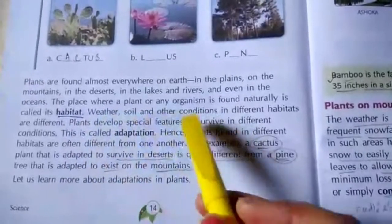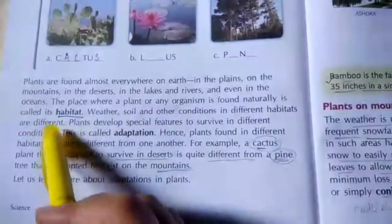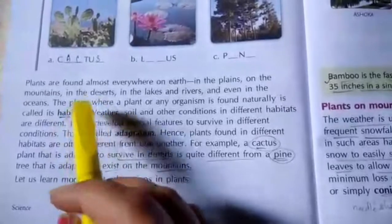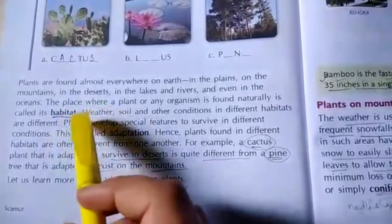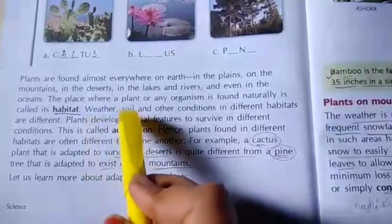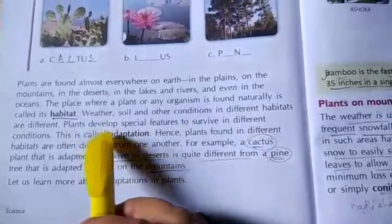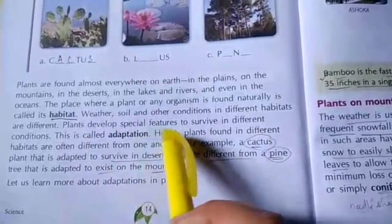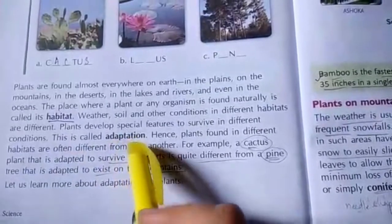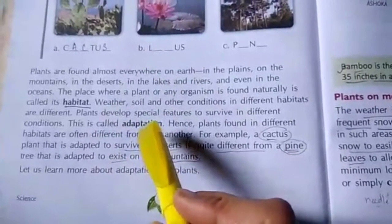Weather, soil and other conditions in different habitats are different — all habitats are not the same. Plants develop certain special features to survive in those conditions, and this is known as adaptation. Those features which help them to adjust to their surrounding or area are known as adaptation.